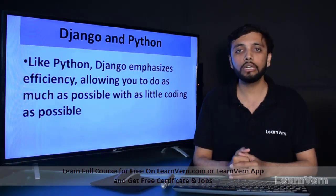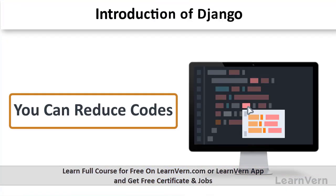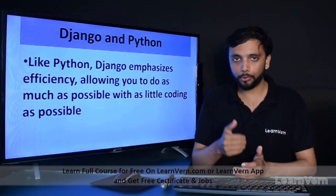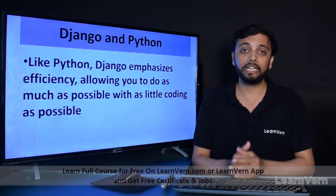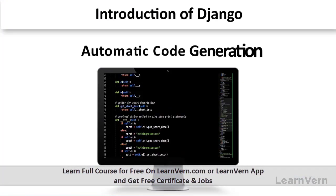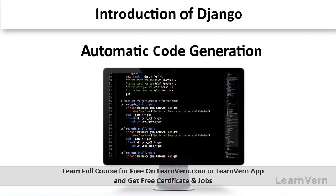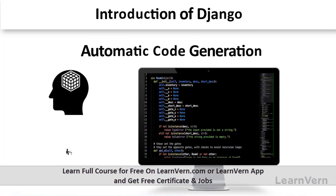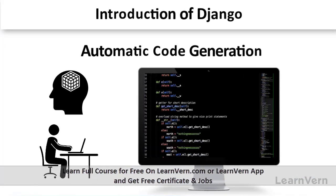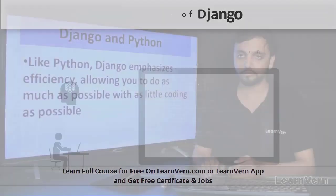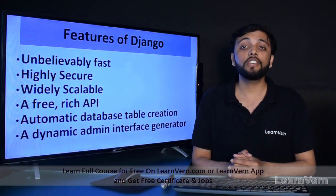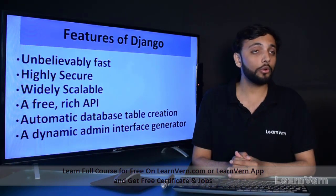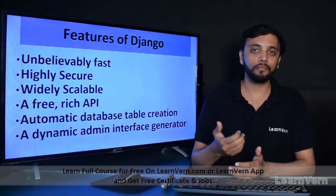Like Python, Django emphasizes efficiency and allows you to reduce your code as much as possible. Django provides as little coding as possible because it provides automatic code generation. You just have to develop your logic and code it to develop your web application.